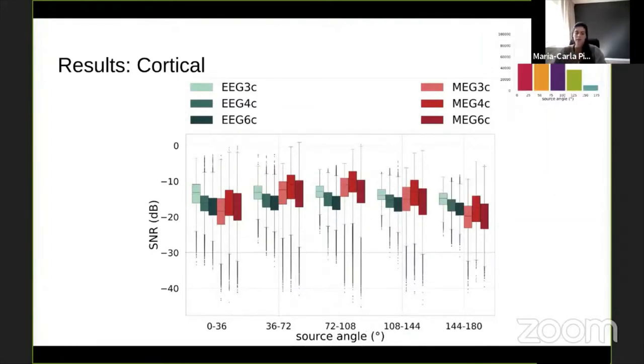Similar thing for the modulation given by the source angle. Again, here on the upper right corner we see the histogram of the source angles. We see the same trend for the EEG results. So pretty constant throughout the angles. While we see kind of a growing and decreasing trend for the MEG results. We have to remember that the central bin is related to the tangential sources. So again, this makes sense to us. The main thing is that from these two figures we can see that while there's a modulation given by different volume conduction head models, so the accuracy of the volume conduction head model is modulating the results concerning EEG. This is not the case for the MEG, but vice versa. There's no modulation given by source depth for the EEG results, while there is actually for the MEG case.